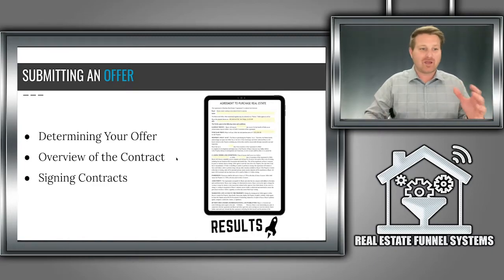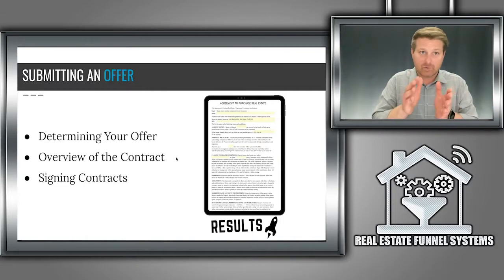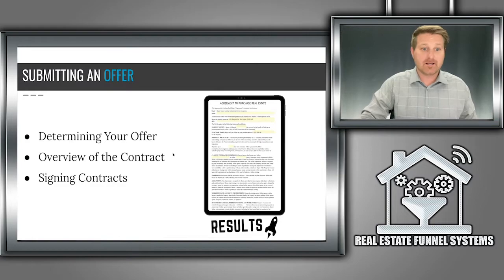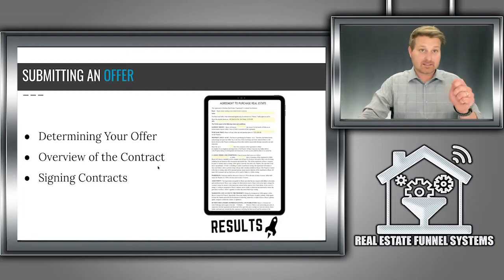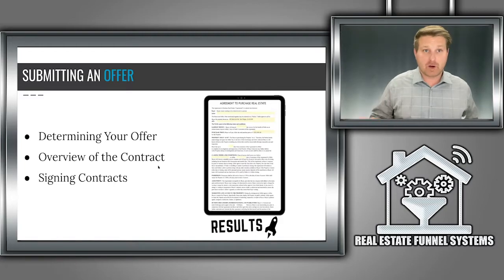We've already figured what our offer is through our deal analyzer. That's our calculator to figure out our margins, how much profit is going to be on the table. All of that is done in the deal analyzer. Once we identify that, we just need to simply fill out the purchase and sale agreement and sign it. There's a couple different ways to go about this.